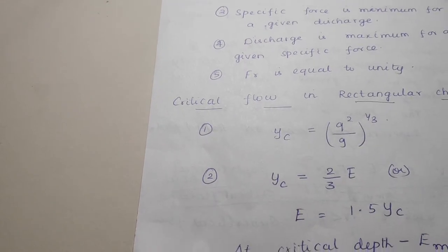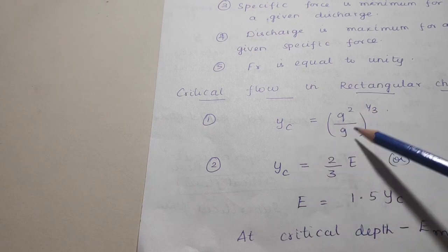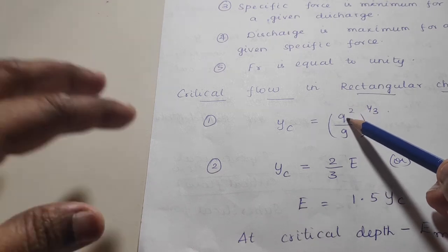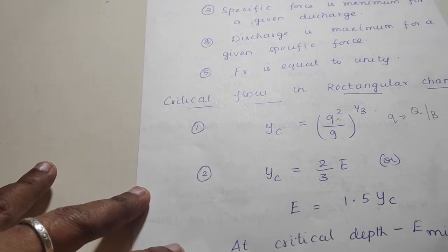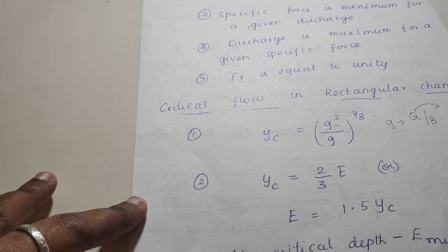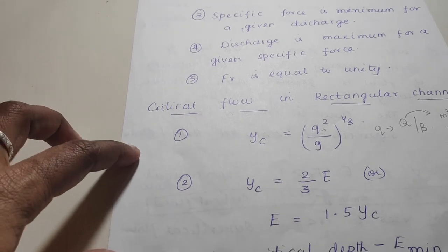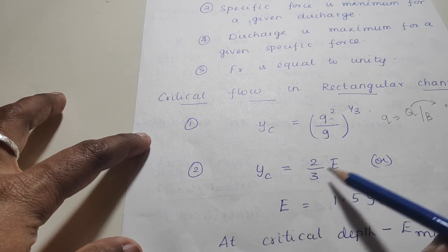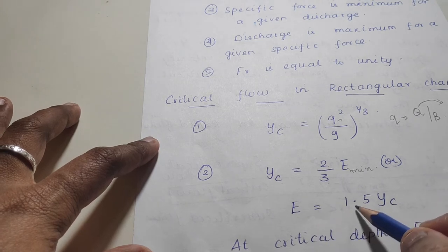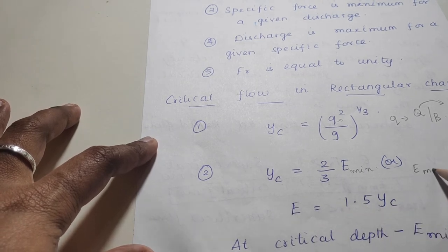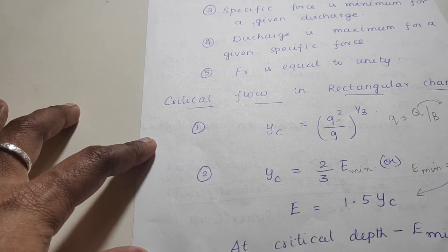For a rectangular channel, the condition for critical flow is yc equals (q²/g) to the power of 1/3, where q is the discharge per unit width — that is Q divided by width b, with units of m³/s per meter. Also, yc equals 2/3 of E minimum, or equivalently E minimum equals 1.5 yc.